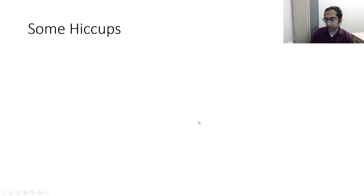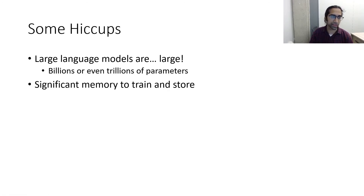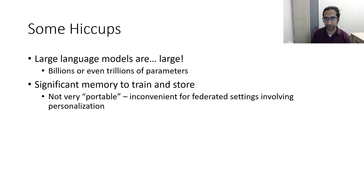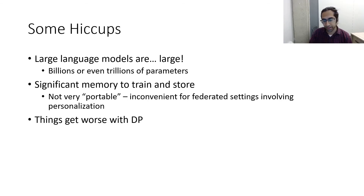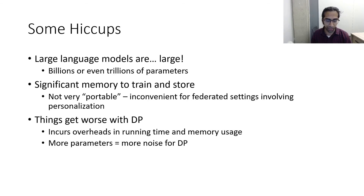There are some hiccups, however. Large language models are large — involving billions or even trillions of parameters — which creates problems. Even in the non-private setting there are significant memory overheads for training and storage, which is inconvenient for settings like federated learning where personalization may require storing many different copies of the model. Things get even worse with DP: there are additional runtime and memory overheads, and a common trend is that larger models incur more noise when training privately, resulting in worse accuracy.